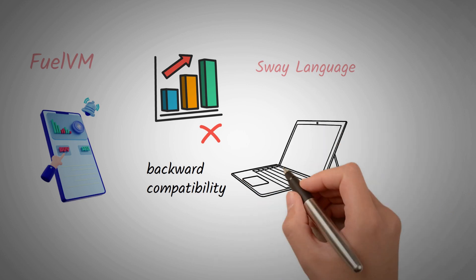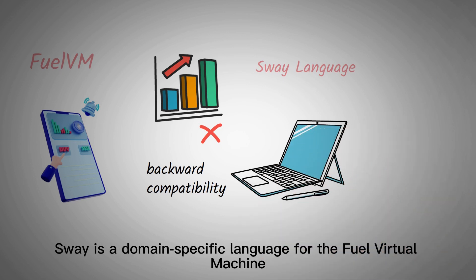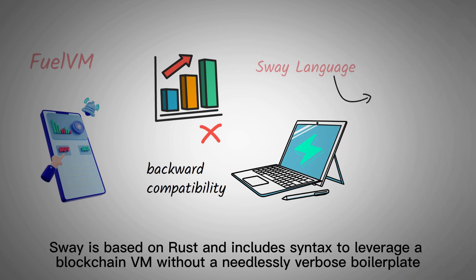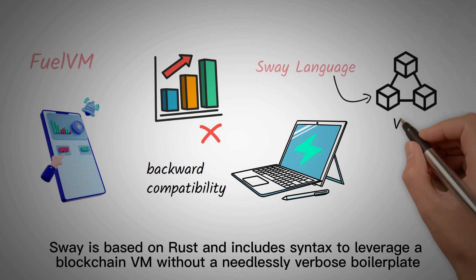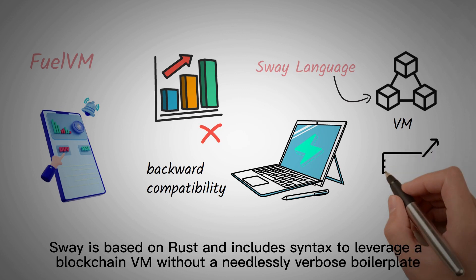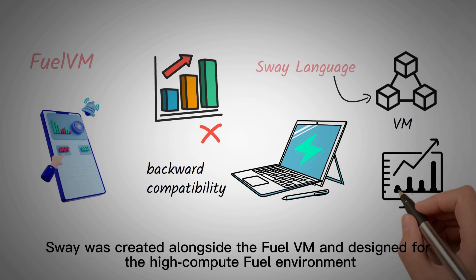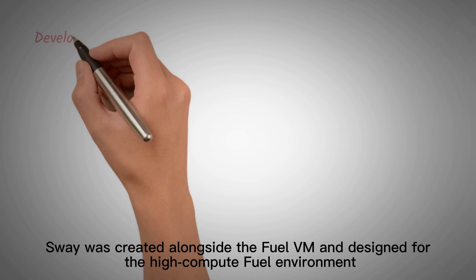Sway is a domain-specific language for the Fuel virtual machine, a blockchain-optimized VM designed for the Fuel blockchain. Sway is based on Rust and includes syntax to leverage a blockchain VM without a needlessly verbose boilerplate. Sway was created alongside the Fuel VM and designed for the high-compute Fuel environment.